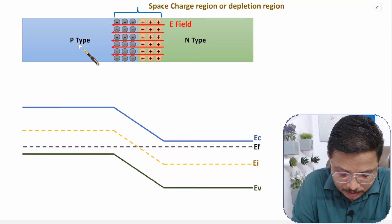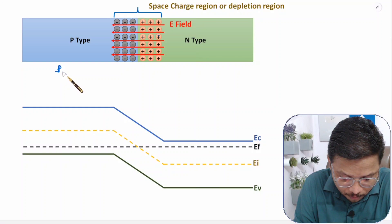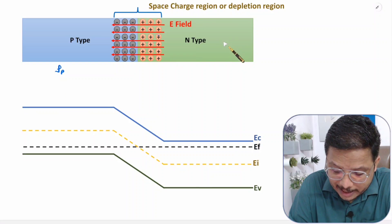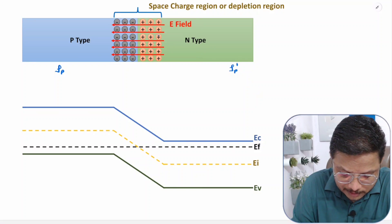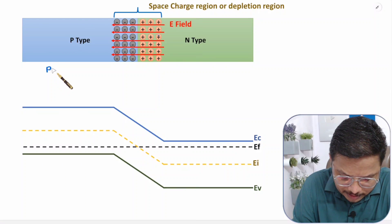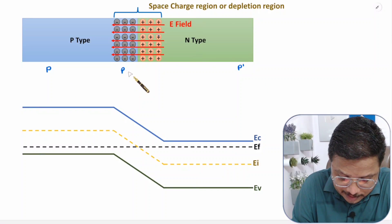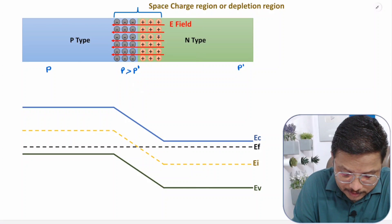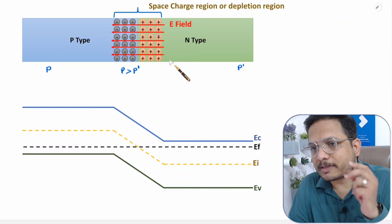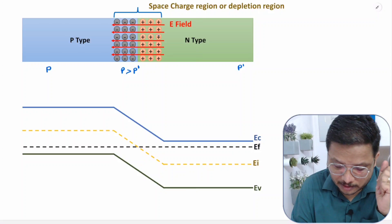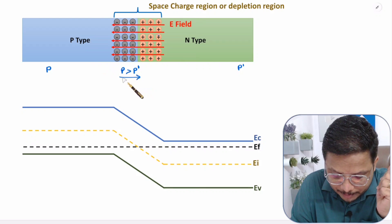Here we are having positive ions on one side and negative ions on the other, resulting in a potential barrier. But we are having P-type material on one side, so density of holes — let us say concentration of holes is P here and P dash over at the N-side. So obviously P is greater than P dash, meaning a concentration gradient is happening. Because of concentration gradient, there will be diffusion current; diffusion of holes will happen in this direction.